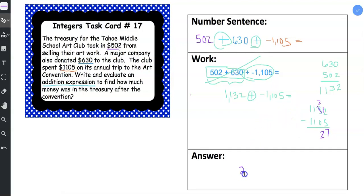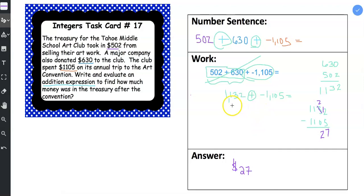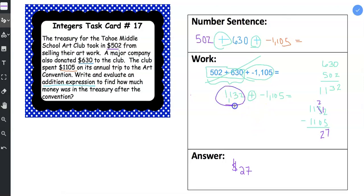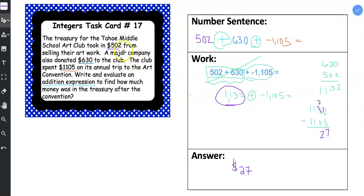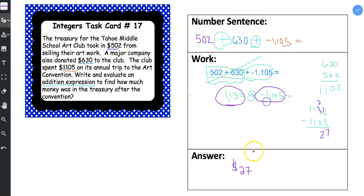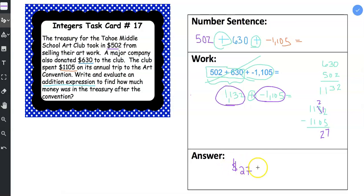So we end up with a positive $27 in the treasury. We brought in more money, or they brought in, the middle school brought in more money, the art club, than they spent. So they ended up with a positive $27 in their treasury.